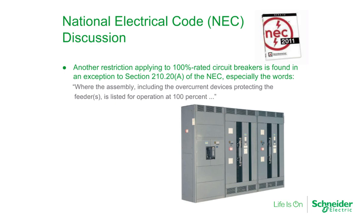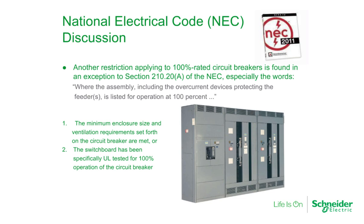Switchboard manufacturers do not label their enclosures as either 100% or standard rated. Instead, a switchboard is suitable to have 100% rated circuit breakers installed and applied at 100% if the minimum enclosure and ventilation requirements set forth on the circuit breakers are met, or the switchboard has been specifically UL tested for 100% operation of the circuit breaker. In enclosures supplied with standard rated circuit breakers, it is not necessarily possible to replace a standard rated circuit breaker with a 100% rated circuit breaker and obtain 100% rating. The enclosure must meet the minimum enclosure and ventilation requirements and be marked as such.